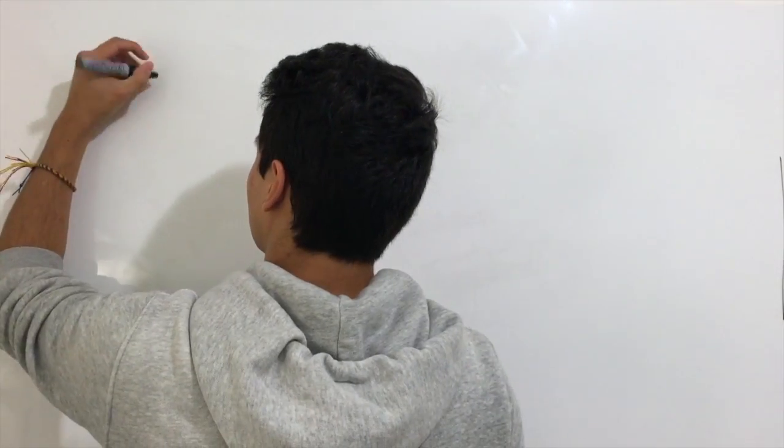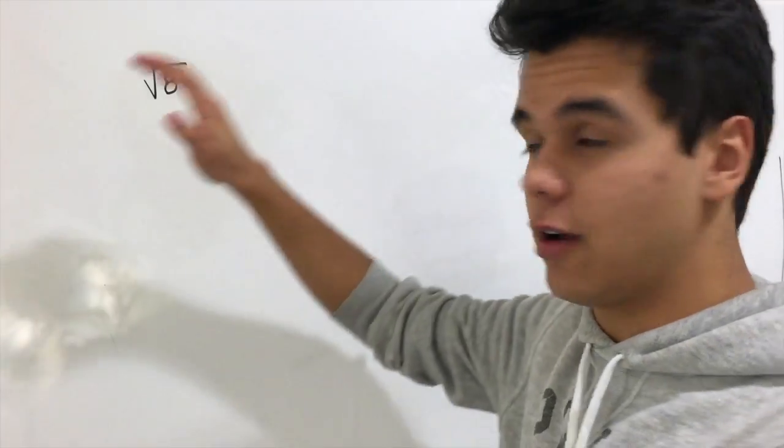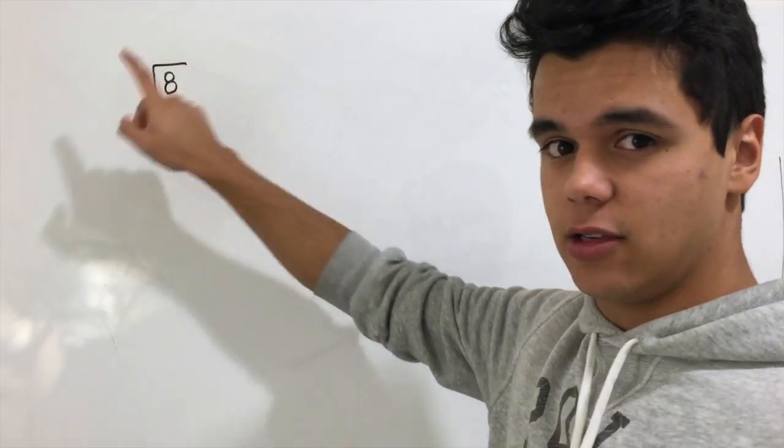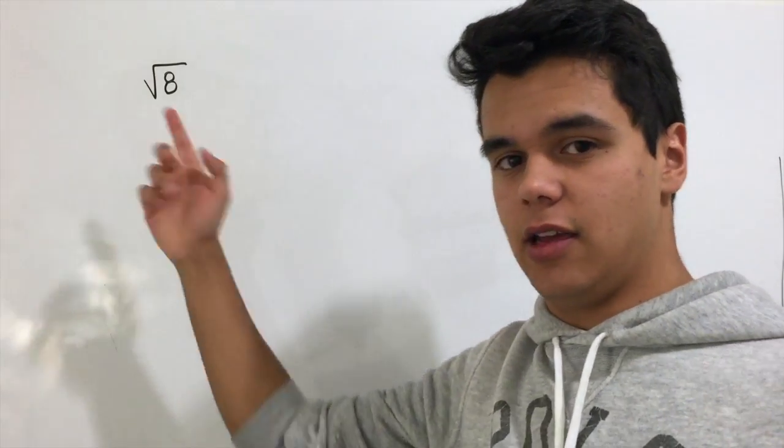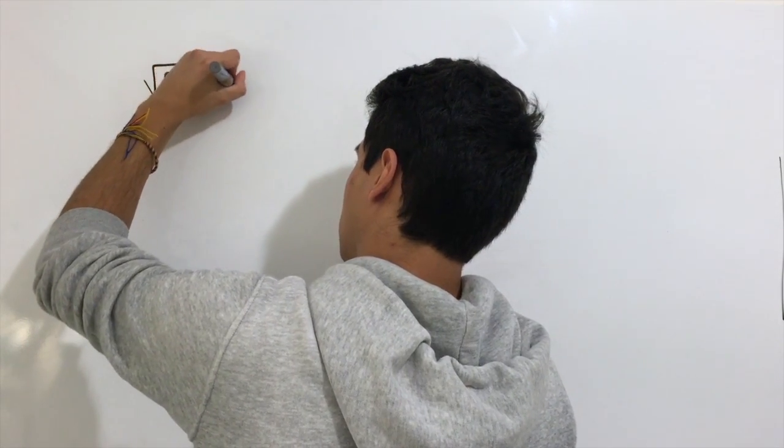Hey what's up you guys, my name is Juan and today I'd like to show you guys how to simplify radical expressions. Let's get started. The simplified form for square root of 8 is equal to 2 times the square root of 2.